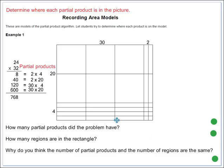So what we need to do is determine where each partial product is in our area model. Our problem here is 24 times 32. Doing this by partial products means we're going to start with our ones place and multiply 2 times 4, which gives us a total of 8 units. Now that partial product is represented over here.